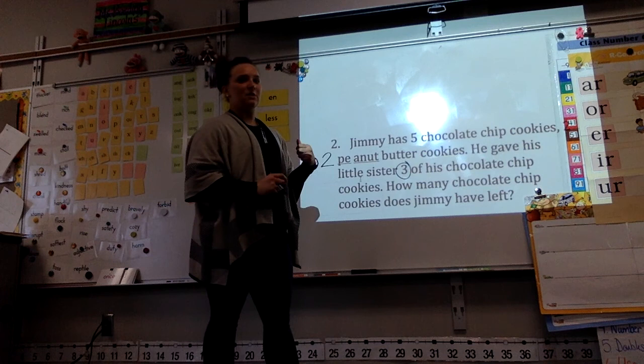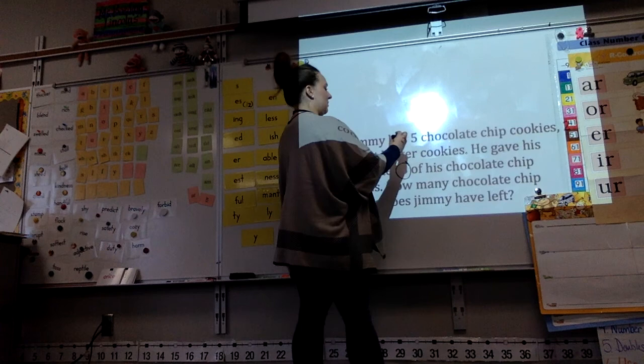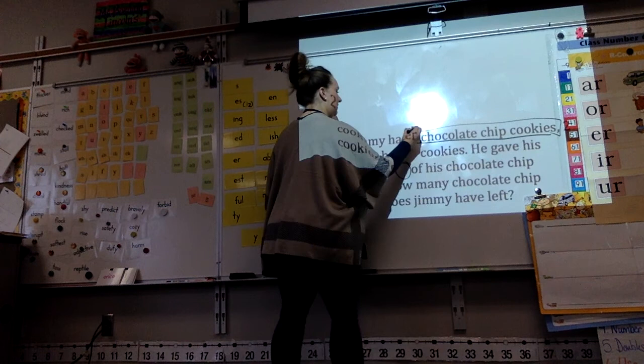And see, I went through, when I saw that number, I decided to circle it because it looked important. So, I'm going to go back through, though. Jimmy has five chocolate chip cookies. And I see that, so I'm going to underline that. Those are his chocolate chip cookies. He has five. Five chocolate chips. He has two peanut butter cookies. That looks important.